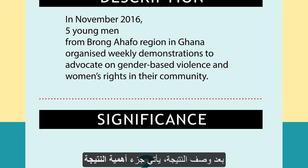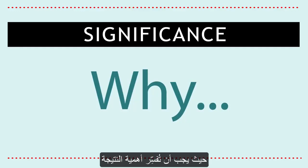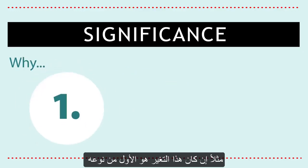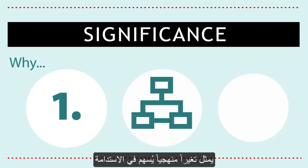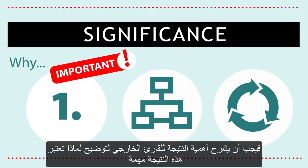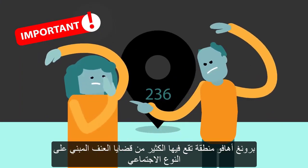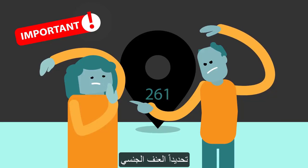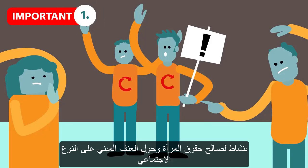After the outcome description comes the outcome's significance, or why this outcome is important. You explain the importance such as if the change is the first of its type, it represents a systemic change, or it contributes to sustainability. The significance should convey to an external reader why the outcome is important. Brongahafo is a region with a high number of cases of gender-based violence, particularly sexual violence. This outcome is significant because it was the first time young men from that community took action for women's rights and gender-based violence.